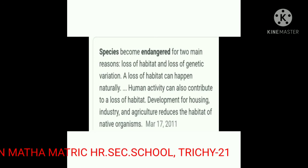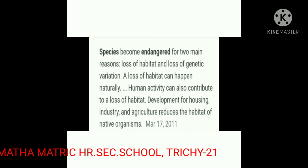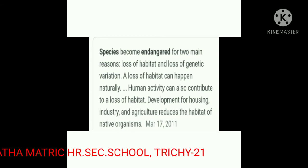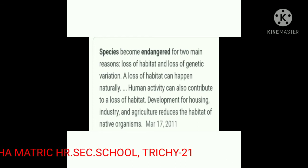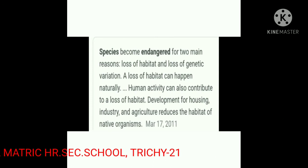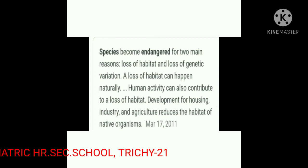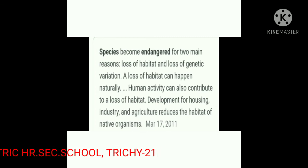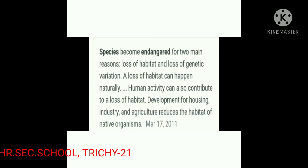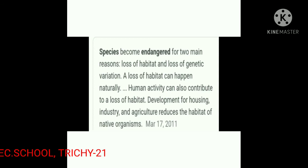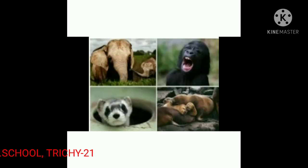Species become endangered for two main reasons: loss of habitat and loss of genetic variation. A loss of habitat can happen naturally, but human activity can also contribute. Development for housing, industry, and agriculture reduces the habitat of native organisms. An animal is said to be endangered if its population is currently less than 50, or less than 250 for the past three years.